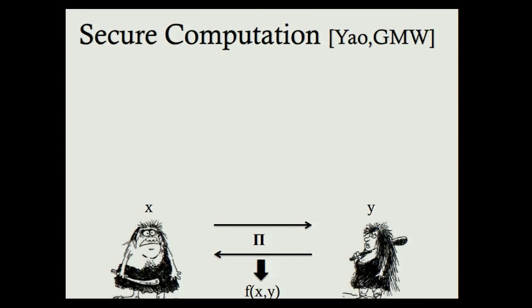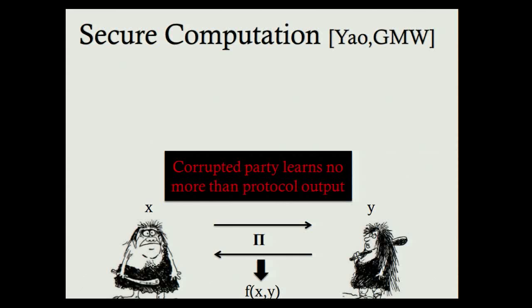Let's briefly recall what secure computation is. There are two parties, Alice and Bob, who have inputs X and Y, and they would like to compute F of X and Y through a protocol. The goal of security is that if you corrupt any one party, they learn nothing more than the output of the protocol. This is a very well studied notion from 1982.